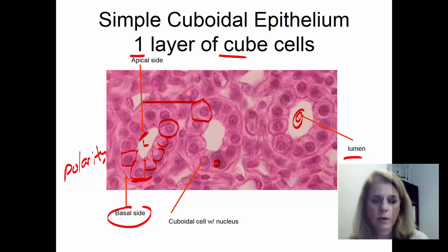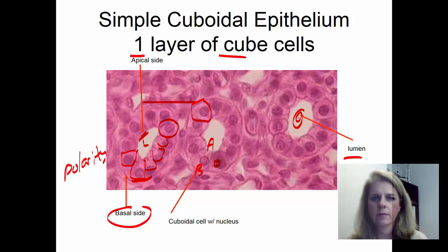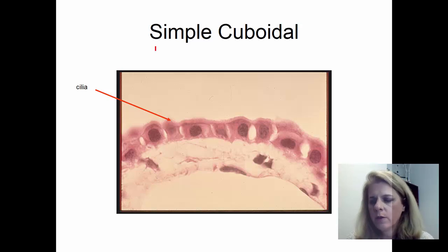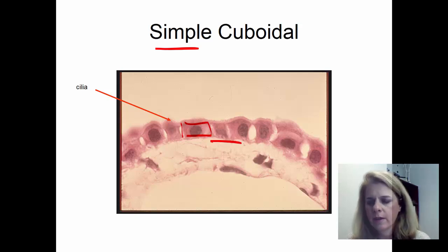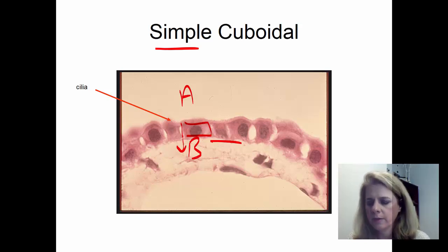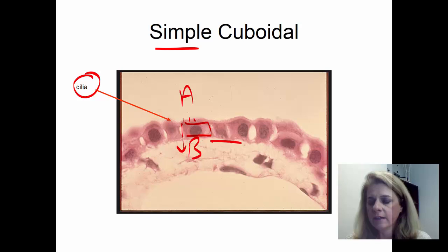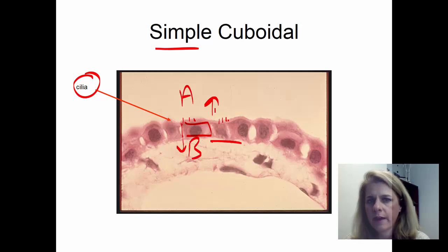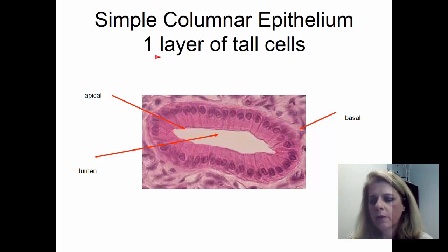The apical side is always going to be the side that faces the lumen, and the basal side is the side that connects it to the rest of the body — connected to connective tissue or other cells. Also, when you see something that looks kind of fuzzy, a lot of times that's going to be cilia — little fuzzy hair-like things. Cilia are always on the apical side, so if you see cilia you know you're on the apical side.